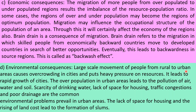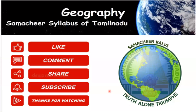Environmental consequences: large-scale movement of people from rural to urban areas causes overcrowding in cities and puts heavy pressure on resources, leading to rapid growth of cities. Overpopulation in urban areas leads to pollution of air, water, and soil. The scarcity of drinking water, lack of space for housing, traffic congestion, and poor drainage are common environmental problems prevalent in urban areas. The lack of space for housing and rising land costs lead to the formation of slums. In the next class, we will see the meaning of urbanization and the causes and consequences of urbanization. Thank you for watching — please give your suggestions in the comment section and kindly subscribe to the channel.